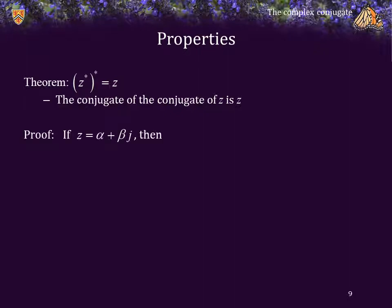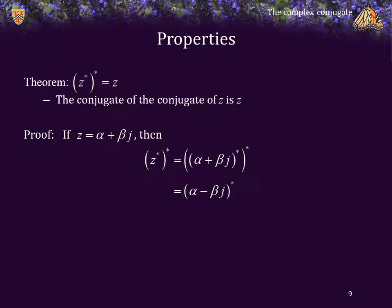Proof: Let z equal alpha plus beta j. Then z star star is equal to alpha plus beta j, starred, and that result starred again. The conjugate of alpha plus beta j is alpha minus beta j. The conjugate of alpha minus beta j is alpha minus minus beta j, which is just alpha plus beta j, which equals z.